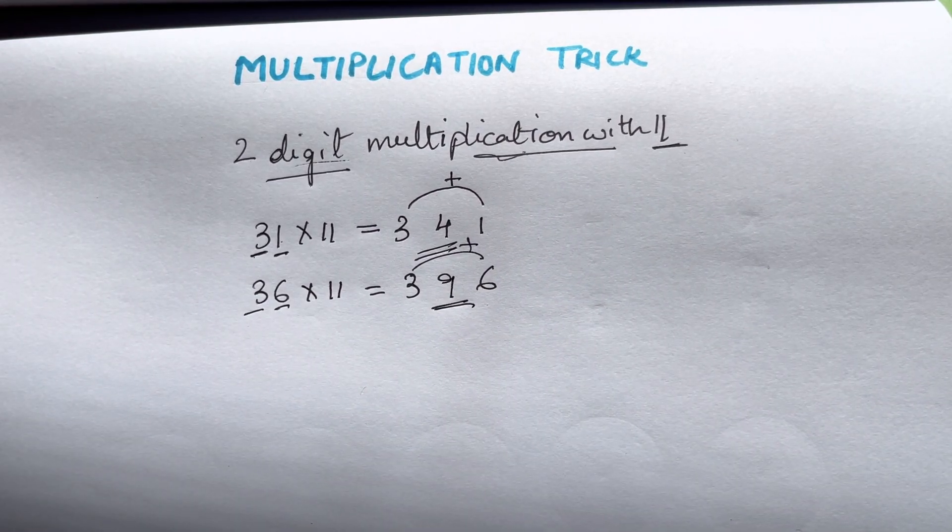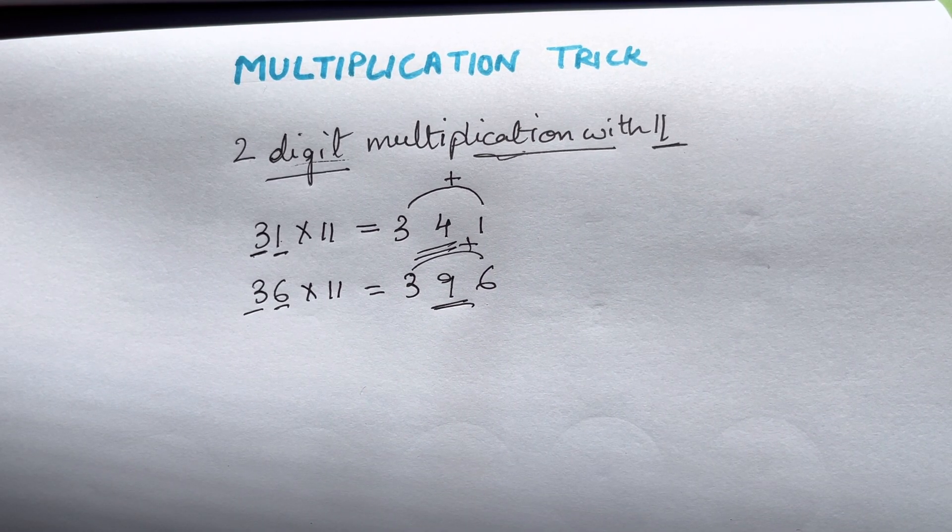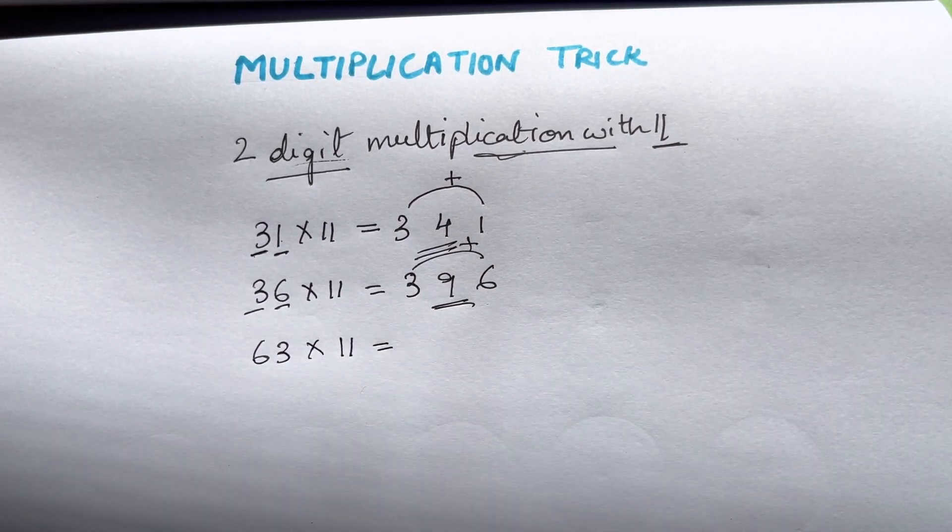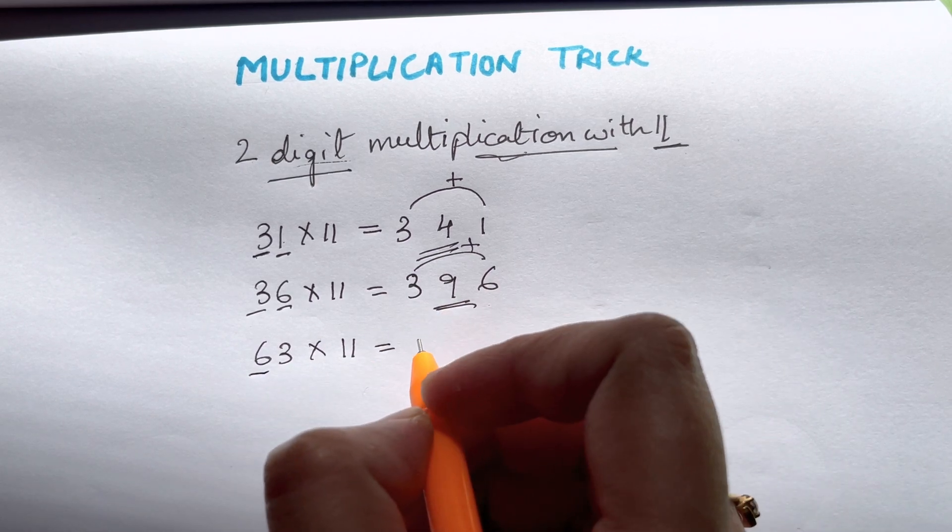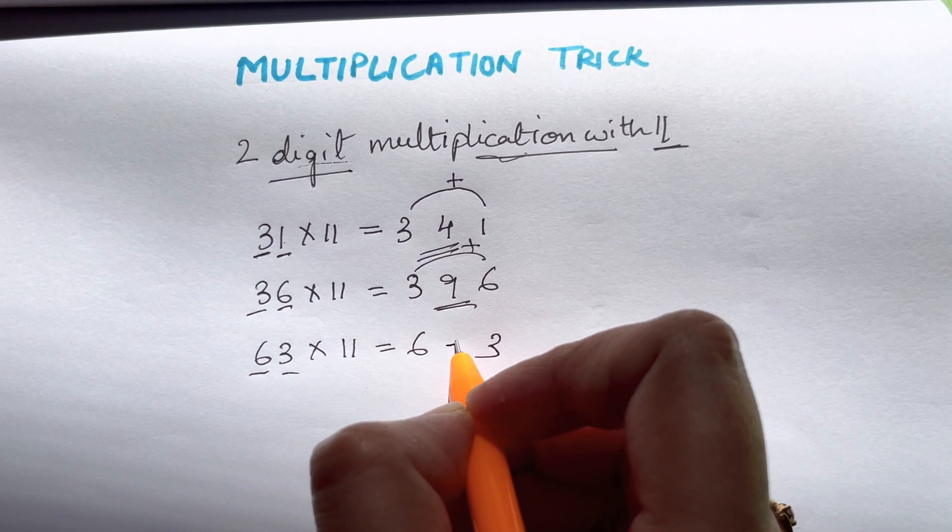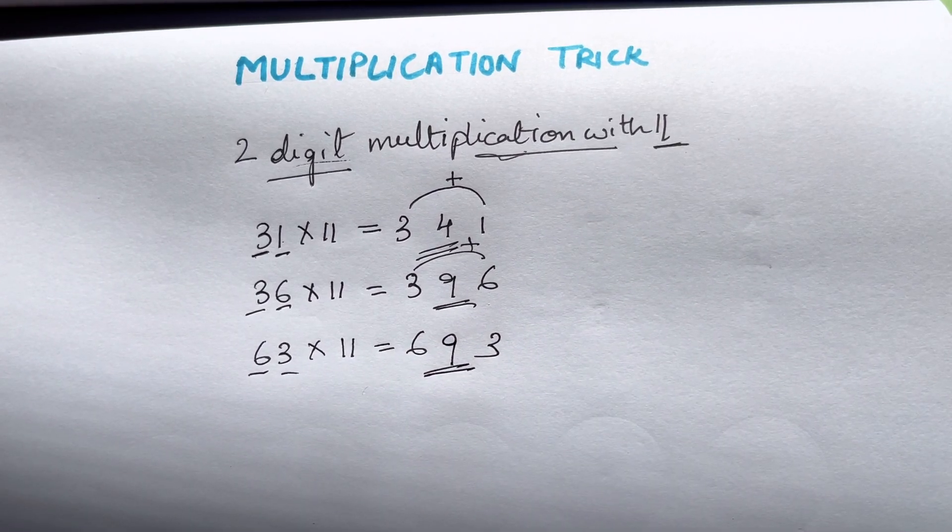Let us try out another example. 63 times 11. You'll just write down 6 and 3, and 6 plus 3 is 9, so your answer is 693.